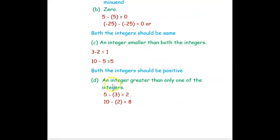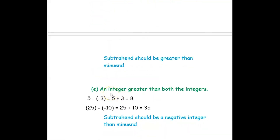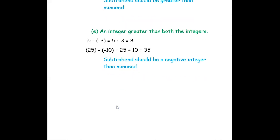Next, find two integers such that the difference is greater than only one of the integers. So 5 minus 3 equals 2 and 10 minus 2 equals 8 — this is possible when the subtrahend is greater than the minuend. Then 5 minus negative 3 equals 5 plus 3 equals 8, and 25 minus negative 10 equals 25 plus 10 equals 35. This case is possible when the subtrahend is a negative integer or a lesser number. Hope you have understood how to find the answers with two integers.